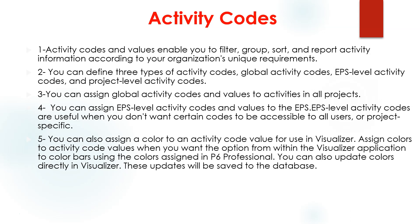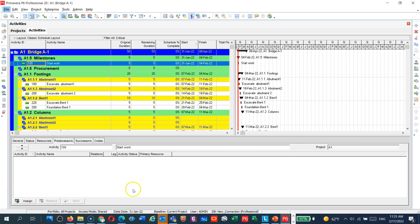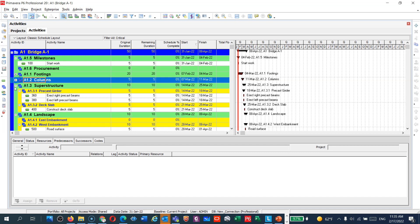Let us now go to P6 live and show you how to create the activity codes. I've tried my best to make the videos short so you can capture all the information. If you have any questions, please send them to me and I will respond. On the screen you can see the project — Bridge A1, which is a two-span bridge — and we created the WBS in the previous lectures along with the activities.